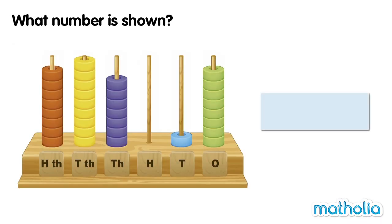What number is shown? Let's count the beads in each place of the place value abacus. Let's start with the 100,000s. In the 100,000s place, there are eight beads. In the 10,000s place, there are nine beads.